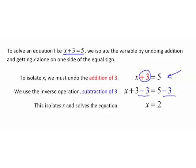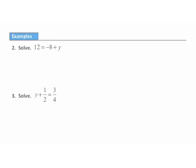3 minus 3 on the left side is 0, which gets x isolated. On the right we end up with 2. Once x is isolated, we have x equals some number, and it's easy to see the value of x that is going to make our equation a true statement.